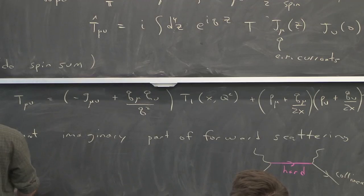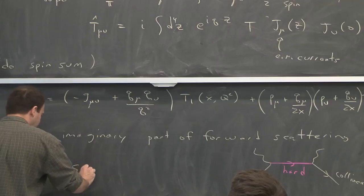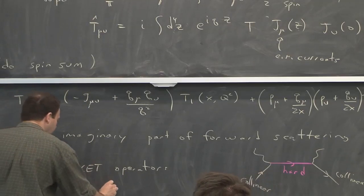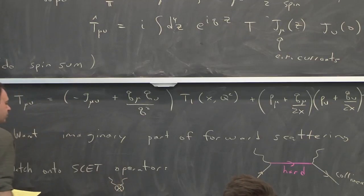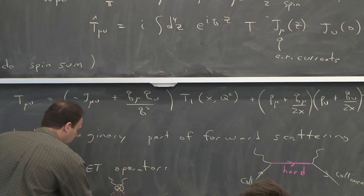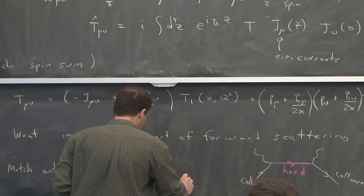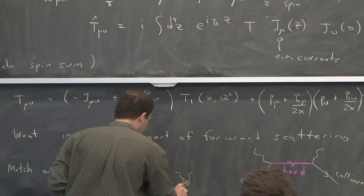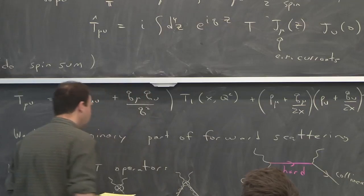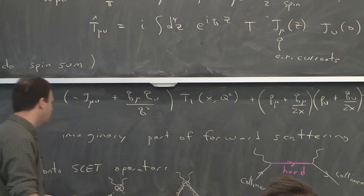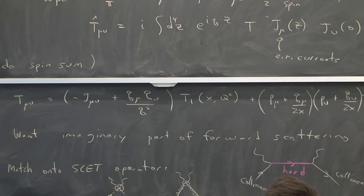And so the operators in the effective theory, we can already intuit what they should look like. They're just going to involve kind of a current with two photons hanging out of it, and then collinear quarks. Those are the external lines there. And there's actually also an analogous thing with collinear gluons. And that's what the type of, so I could have an operator at higher orders where the external states here were gluons. And that's what the operators of the effective theory are going to look like. Just contract that pink line to a point. That's what they look like.